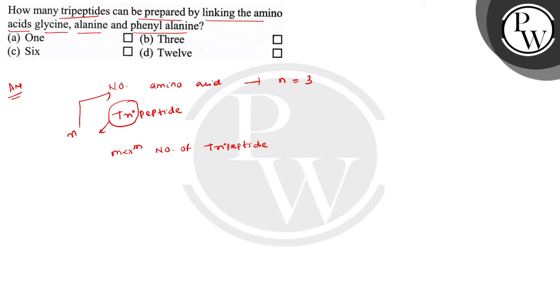For n amino acids and the preparation of n peptide, the maximum number of n peptides that is possible is n factorial. Here the number is three.